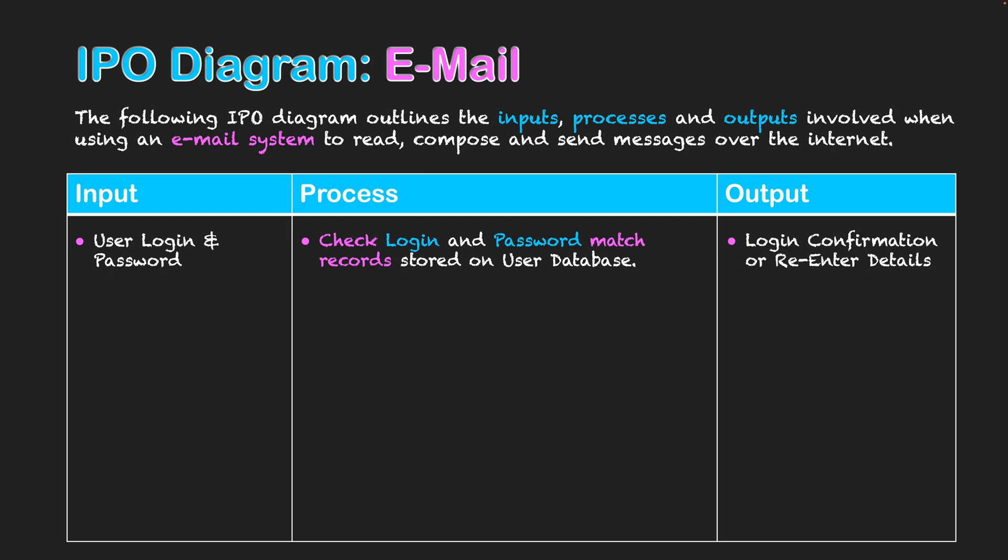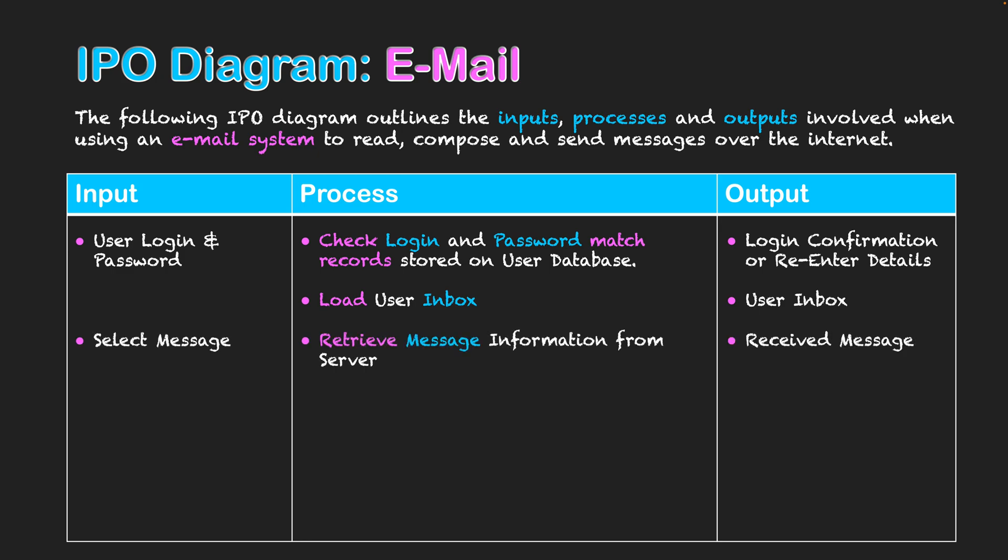If the user's details are correct, the next process is gaining them access to the inbox. The system loads the user's inbox, which is then displayed so they can start navigating their emails. From there, the next input is the user selecting messages.